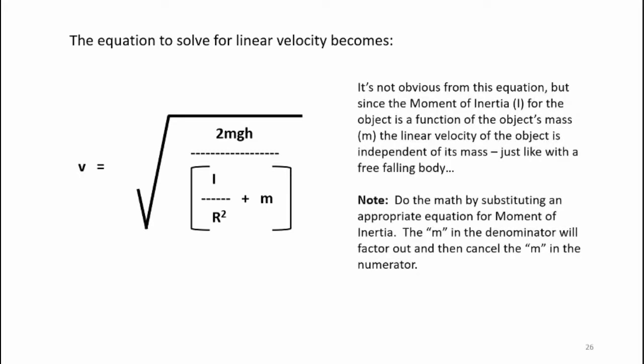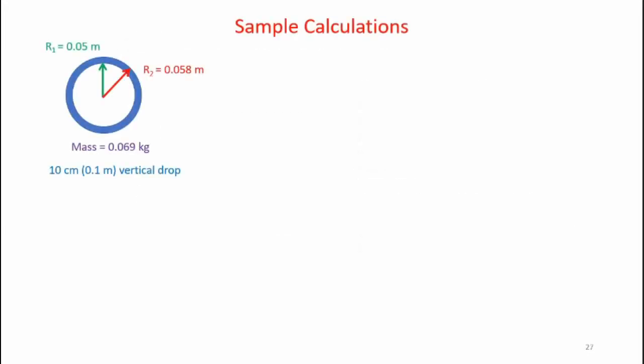It's not obvious from this equation, but since the moment of inertia for the object is a function of the object's mass m, the linear velocity of the object is independent of mass. And that's exactly the same thing as with a free-falling body.